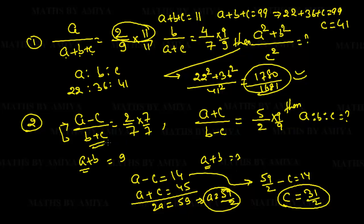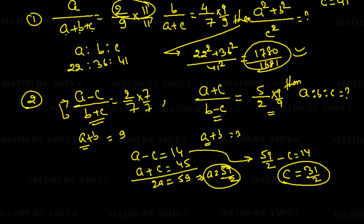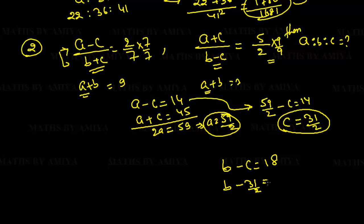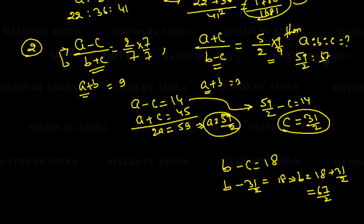With a = 59/2, substituting into a−c = 14 gives c = 31/2. Using b−c = 18: b = 18 + 31/2 = 67/2. So A:B:C = 59/2 : 67/2 : 31/2. Cancelling the common denominator 2, the final ratio is 59:67:31.